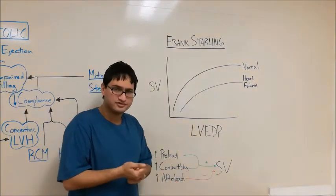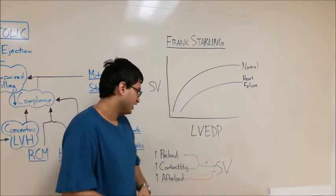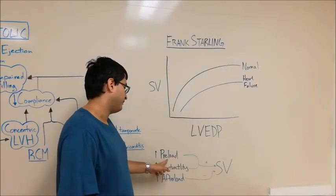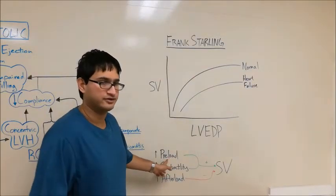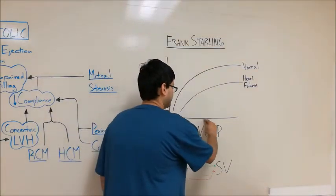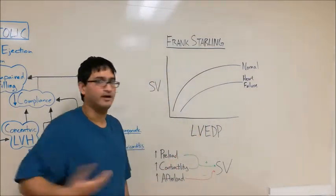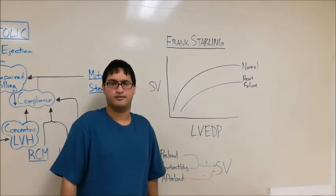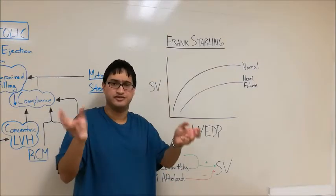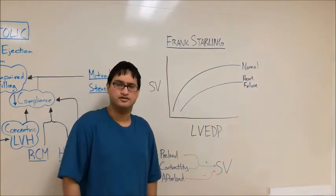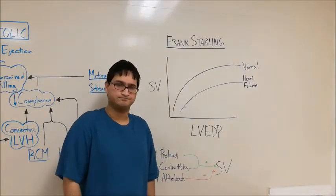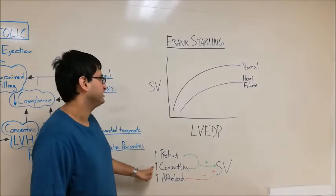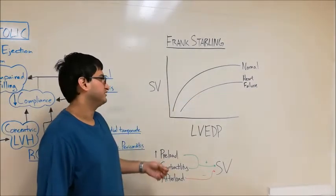Let's review the three main factors that determine stroke volume: preload, contractility, and afterload. Preload is basically the amount of filling you get at the ventricle — as you increase filling along the x-axis, the ventricle pumps out more. Contractility is the intrinsic capability of the heart muscle to pump; think of it as the strength of the heart. High contractility means you can pump really hard; low contractility means it won't pump as hard. Increased contractility increases stroke volume, so a decrease in contractility — as in certain kinds of heart failure — leads to a decrease in stroke volume.